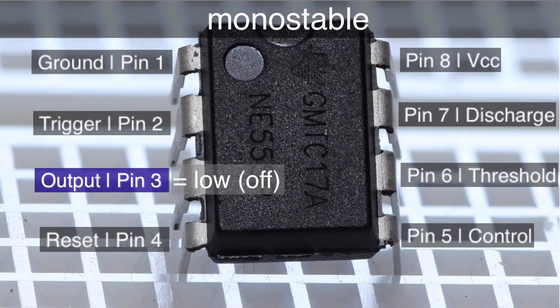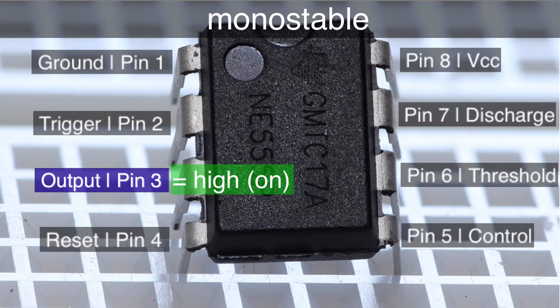During that interval of time, the pin 3 output changes from low to high. When the interval finishes, it returns the output to its stable state, which is low.